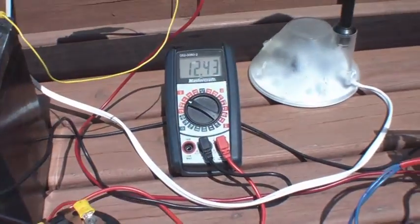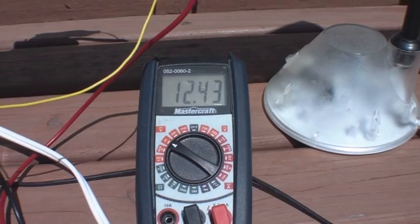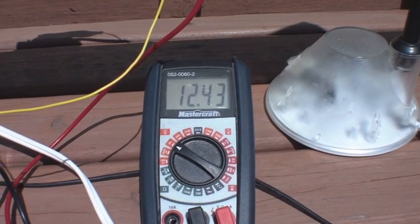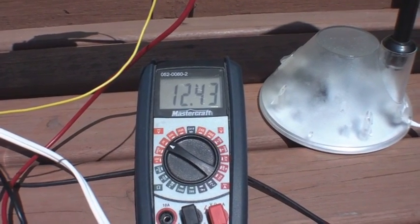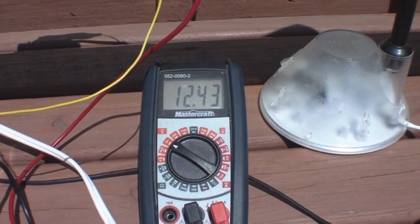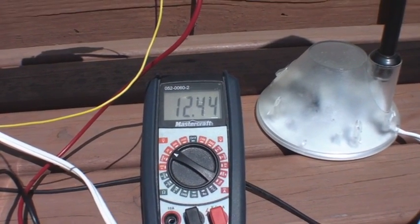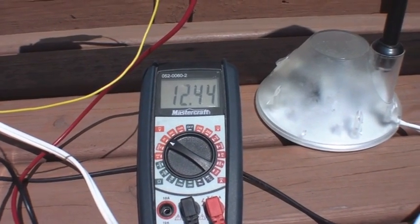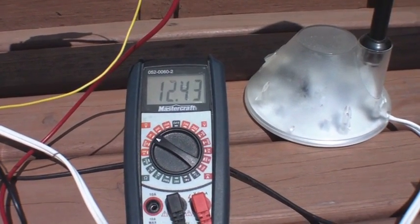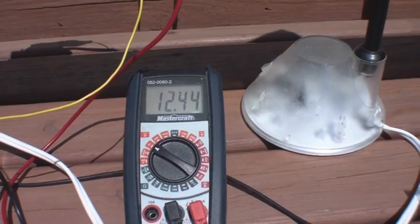You can see under load it just dropped from 12.44, and it's been running for about five minutes. It's kind of hitting its operational plateau at around 12.4 volts when I've got solar energy coming in, which buffers its ability a bit.